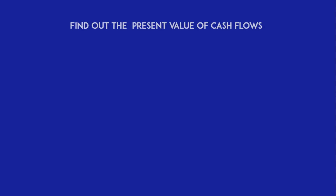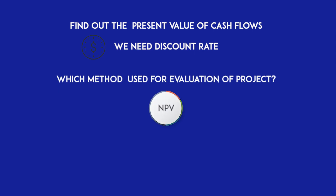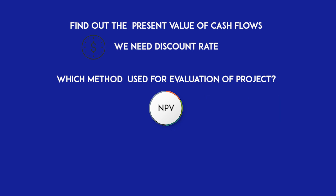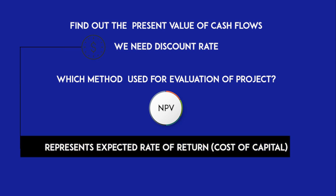How are you going to evaluate a project? Definitely the answer would be by finding the present value of cash flows. For finding the present value of cash flows and comparing with investment, we need a discount rate — as learned under the NPV method. The discount rate used in capital budgeting represents the expected rate of return, which is the cost of capital.